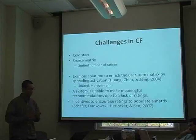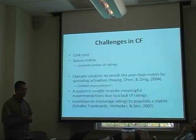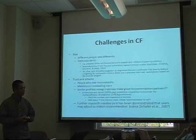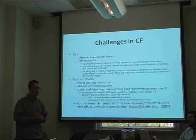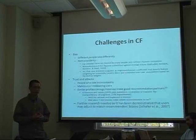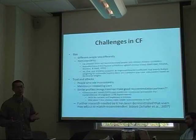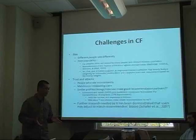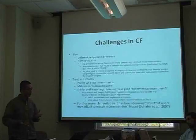Research suggests that incentives are needed to encourage ratings in order to populate the matrix. Another problem is related to bias — on one hand, different people rate differently, and also items have different popularities. For instance, a popular item is favored by so many people that if two people both favor it, it does not tell you anything meaningful. There should be a way to normalize this kind of popularity bias.